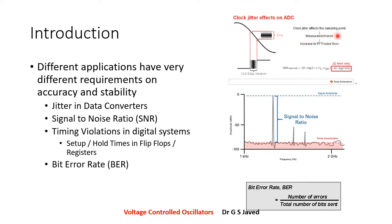These measurement errors typically increase the FFT noise floor. An FFT noise floor is the fast Fourier transform equivalent where you convert time domain information into frequency domain information. In this representation, you understand that the desired signal has a very high amplitude, while the undesired signal is expected to have a very low amplitude.